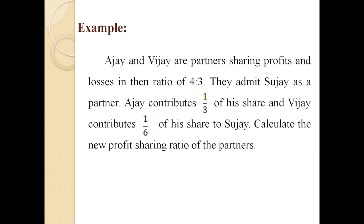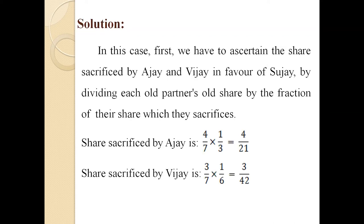For example: Ajay and Vijay are partners sharing profits and losses in the ratio of 4 : 3. They admit Sujai as a partner. Ajay contributes 1/3 of his share and Vijay contributes 1/6 of his share to Sujai. Calculate the new profit sharing ratio. In this example, the old profit sharing ratio is given along with the fractions contributed by each old partner, but Sujai's share is not directly given. First, we ascertain the share sacrificed by Ajay and Vijay in favor of Sujai by multiplying each old partner's old share by the fraction they sacrifice.